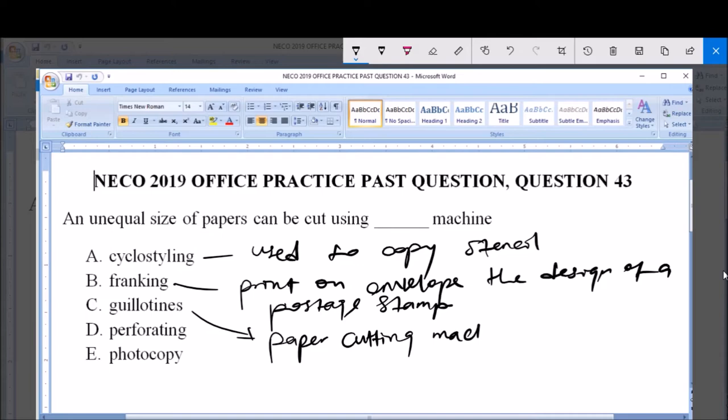A Gillotines machine is a paper cutting machine designed with a rectangular base used for cutting papers of varying size.